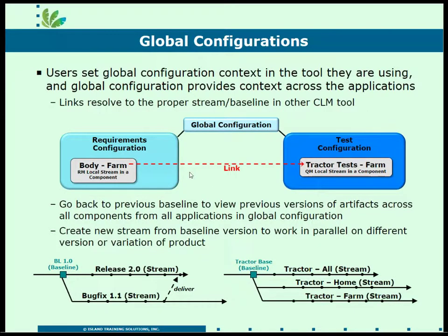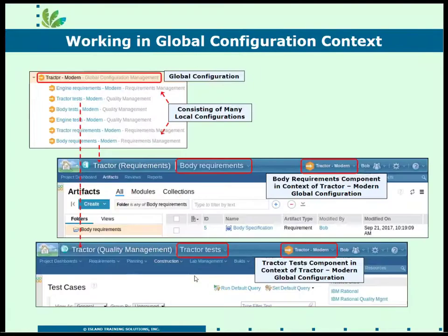Global configuration is like the second half of turning on configuration. First you turn on local configuration, and then global configuration across your local configurations. That then allows links to be drawn from one application to another, and the global stream will set all of the appropriate local streams.